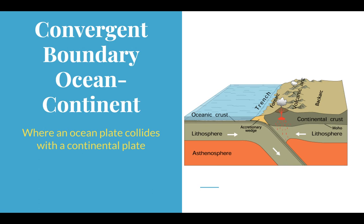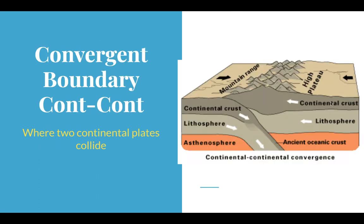This ocean-continent convergent boundary occurs on the west coast of South America, which has very big mountain ranges and deep trenches. Continental crust is made of granite, which is much less dense than basalt, so the denser ocean crust is pushed beneath the continental crust. Trenches form offshore, and the volcanic chain becomes a continental mountain range rather than island chains. Earthquakes are also very common here because the subduction can happen very slowly, building up tremendous energy.